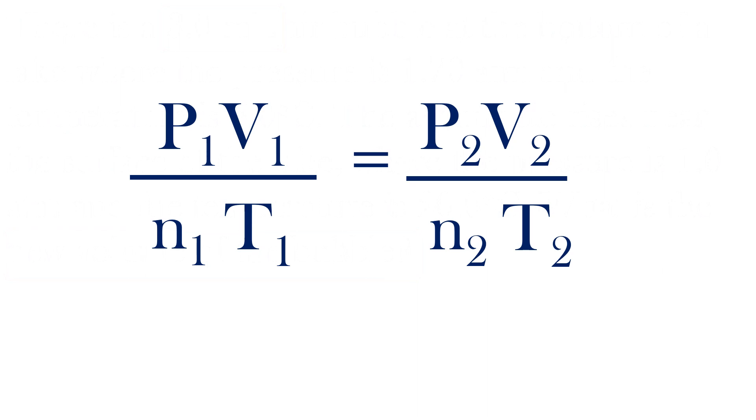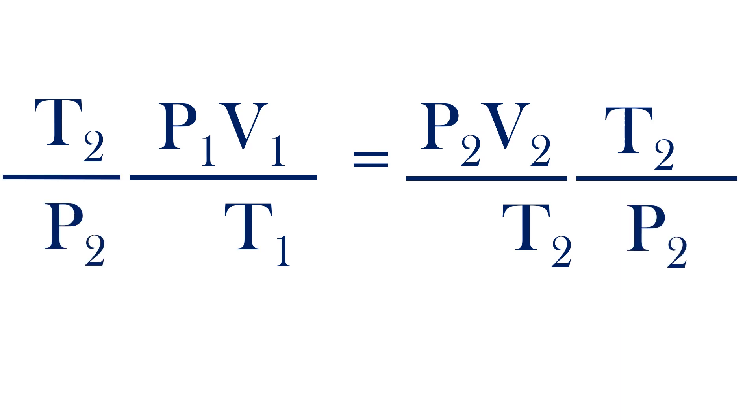Since moles are constant, I can ignore the mole terms in the combined gas law. I'll multiply both sides by T2 and divide both sides by P2 to get the final volume term by itself.